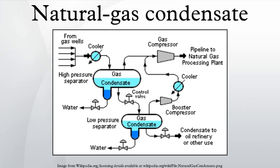Natural gas condensate is a low-density mixture of hydrocarbon liquids that are present as gaseous components in the raw natural gas produced from many natural gas fields. It condenses out of the raw gas if the temperature is reduced to below the hydrocarbon dew point temperature of the raw gas.